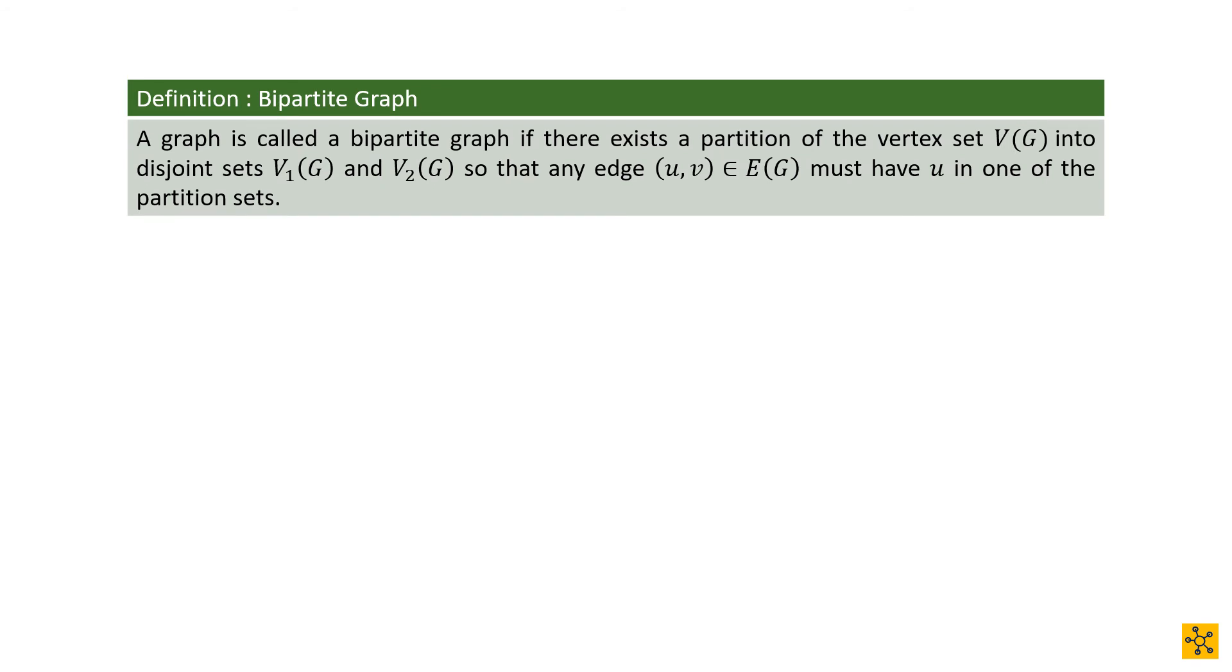A bipartite graph is a two-color graph. The color aspect of it we will bring up later. But bipartite means two, it's in two parts. For the definition, we talk about there exists a partition of the vertex set into disjoint sets. When we talk about disjoint sets, we mean that these sets do not overlap. They have unique elements in both of them.